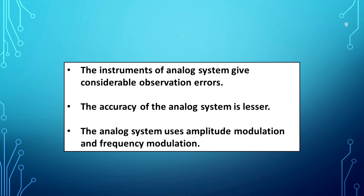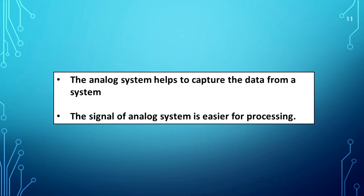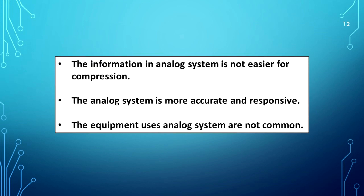The analog system uses amplitude modulation and frequency modulation. The impedance of the devices of the analog system is low. The analog system uses optical fiber and coaxial cable. The analog system uses more passive components and less active components. The signal of the analog system is easier for processing, but the information in the analog system is not easier for compression.